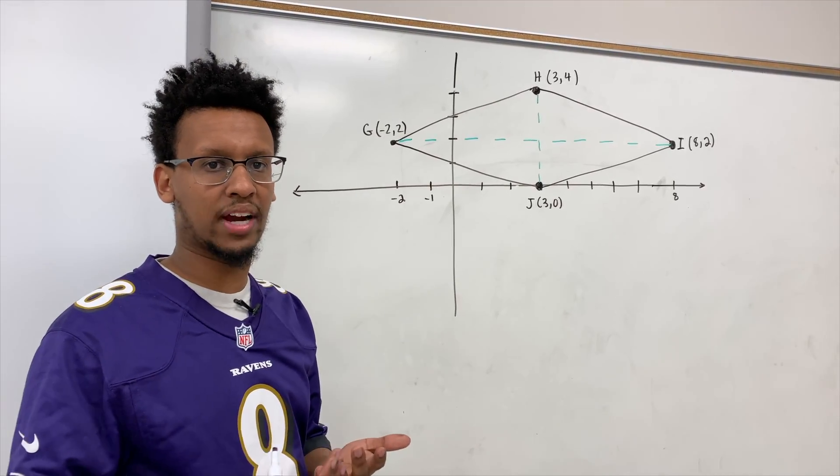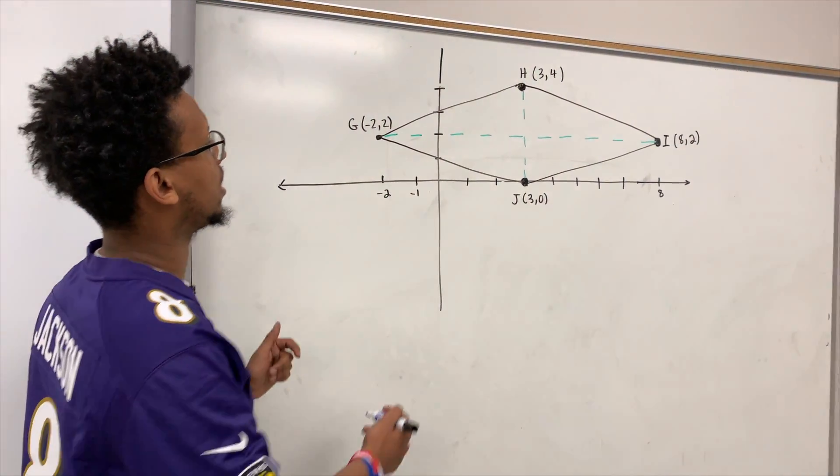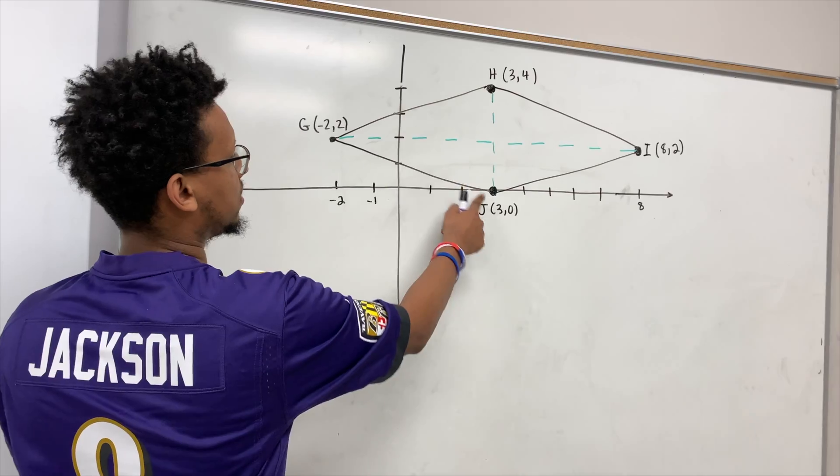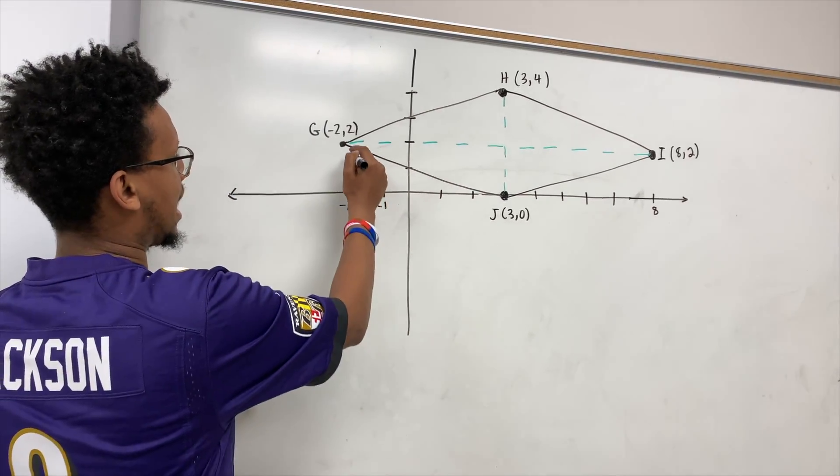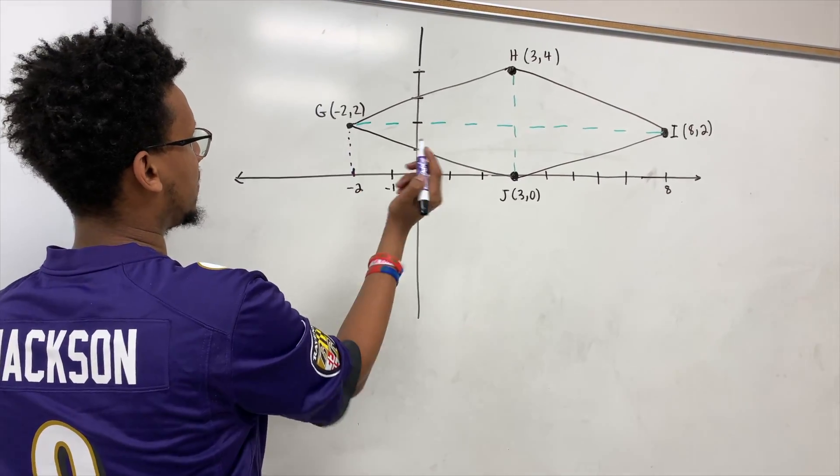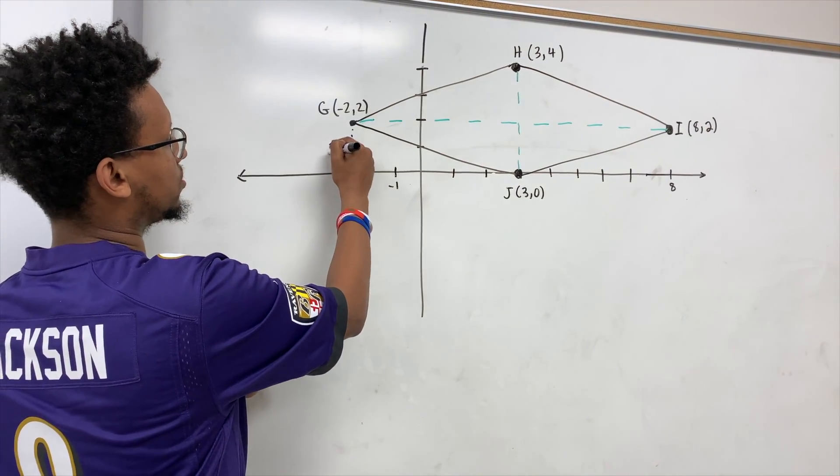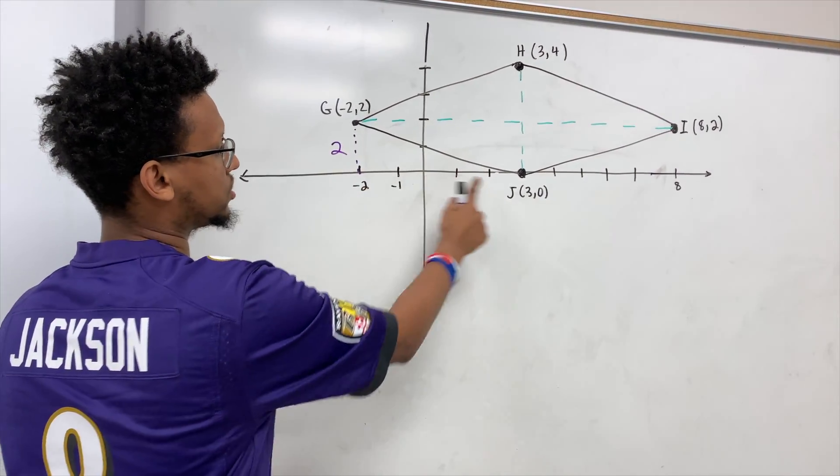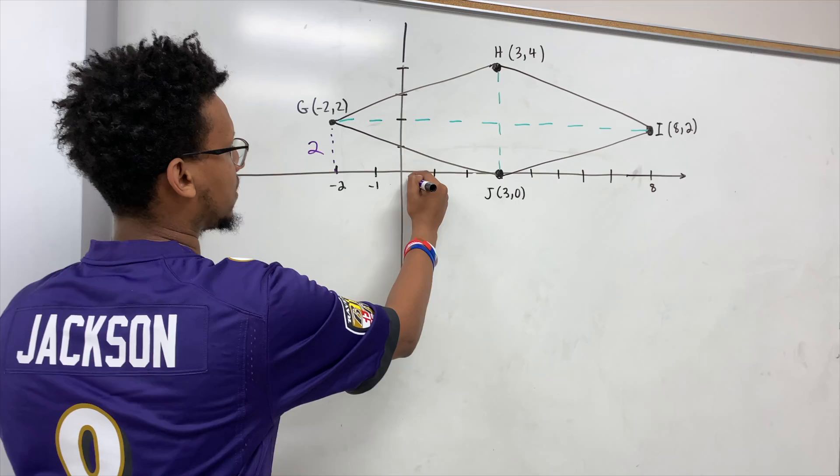So you can always make a right triangle out of anything. So if I could come right here and I want to check the length of this segment, I'm just going to go down and that is a length of 2 and I'm going to go across from negative 2 to 3. That's a length of 5.